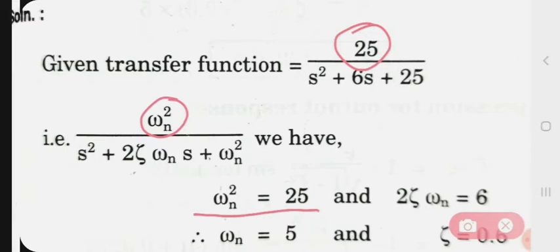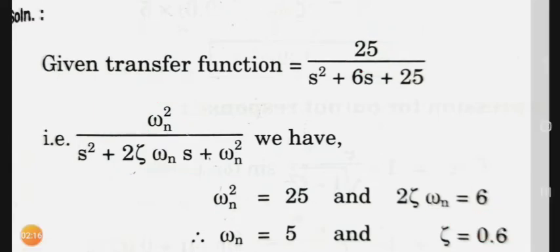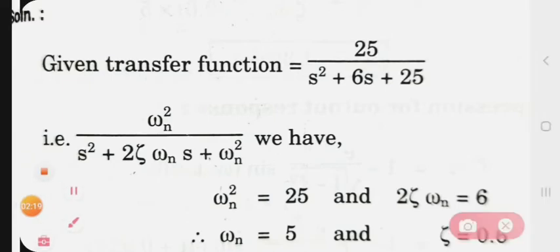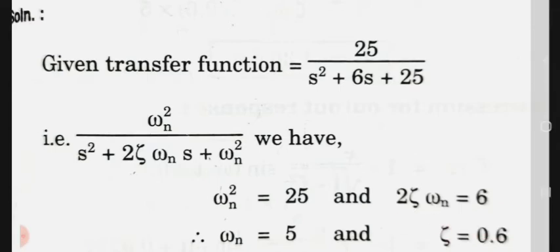Next term we consider 2ζωn and 6s. So twice ζωn is equal to 6, so ζ is equal to 0.6.